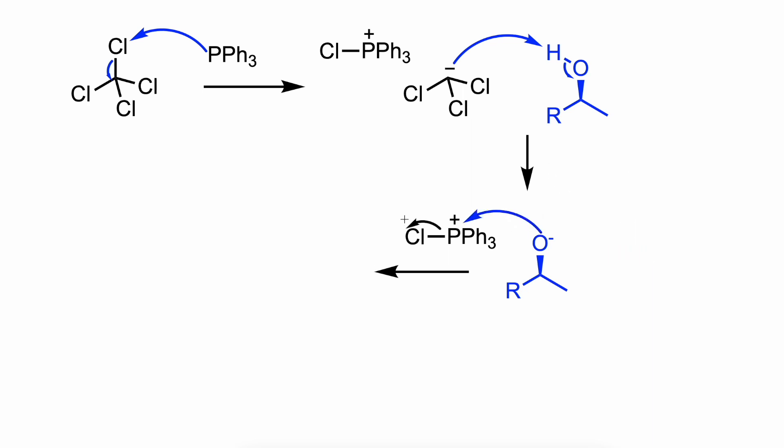Then, the alkoxide attacks the phosphonium salt at the phosphorus center to generate an oxyphosphonium intermediate, making the oxygen a good leaving group that is displaced by the halide, generating the alkyl halide and triphenylphosphine oxide.